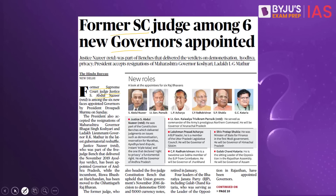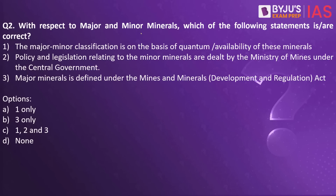Now let's look into the next practice question. With respect to major and minor minerals, which of the following statements is/are correct? The major-minor classification is on the basis of quantum availability of these minerals. Policy and legislation relating to minor minerals are dealt by the Ministry of Mines under the central government. Major minerals is defined under the Mines and Minerals Development and Regulation Act. The answer is none — all the statements are incorrect.